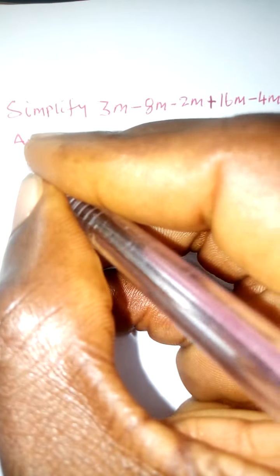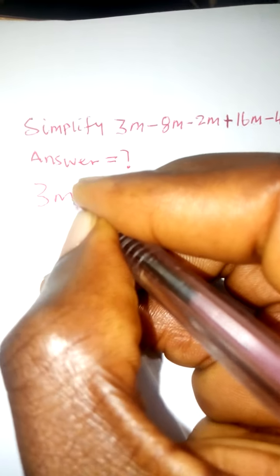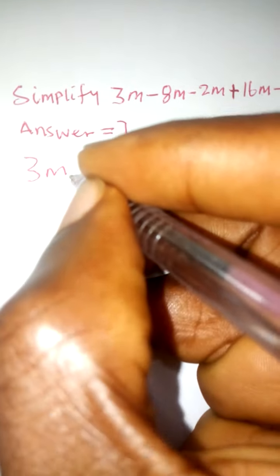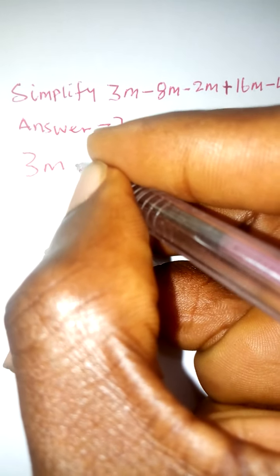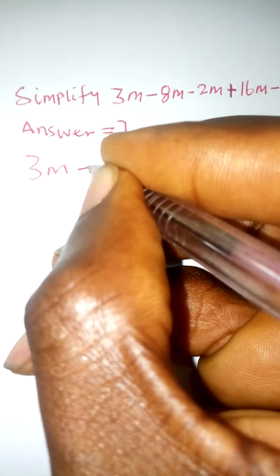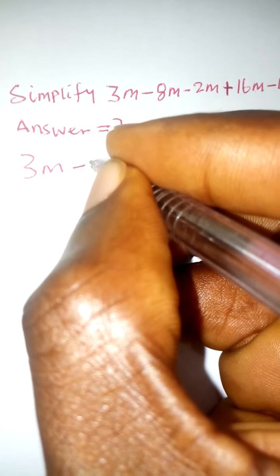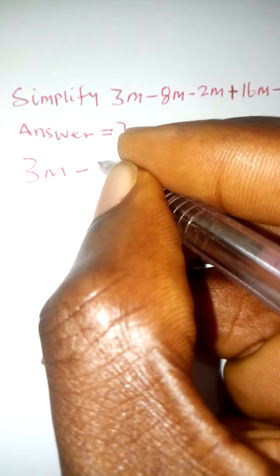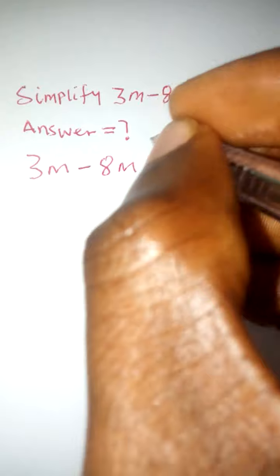So let's see. I'm going to start with 3m. So let's do this. This is 3m. Then there is a minus sign. Then I have 8m.